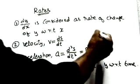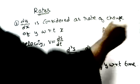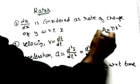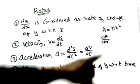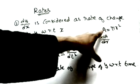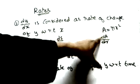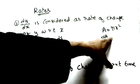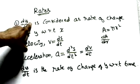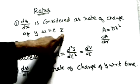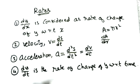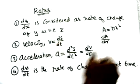Now let us look at rate of change. For example, the area of a circle is πr². If there is a change in the radius, the area also changes. So dA/dr means the rate of change of area with respect to the change in radius. Similarly, dy/dx means the rate of change of y with respect to x. Generally, differentiation with respect to time is referred to as 'rate'.